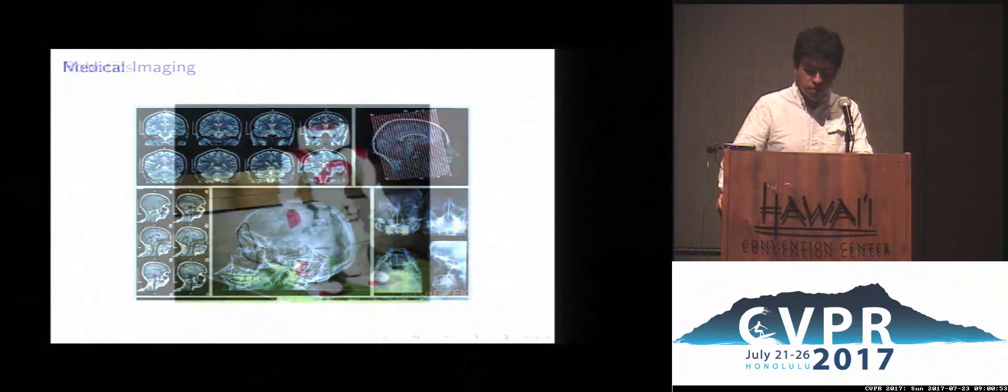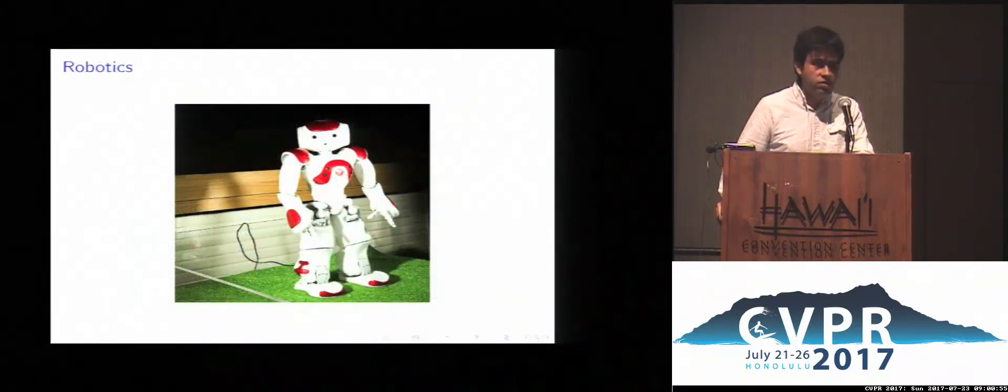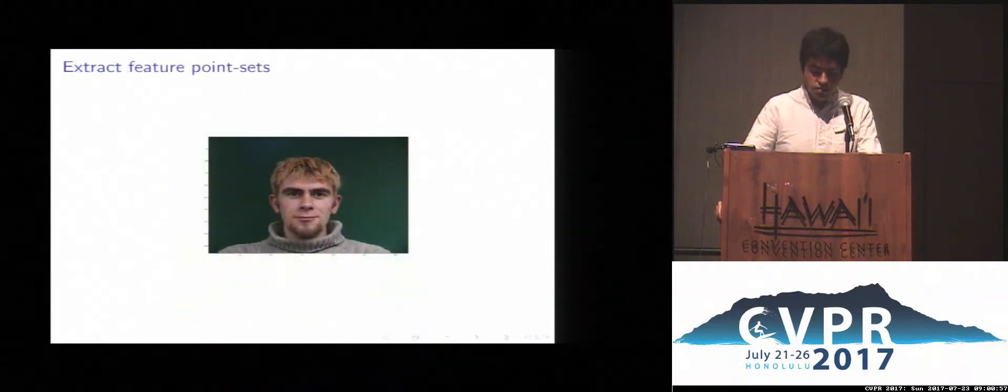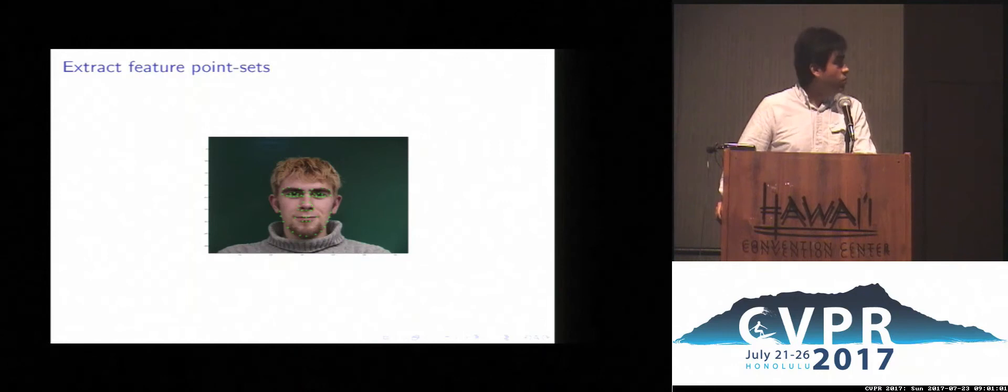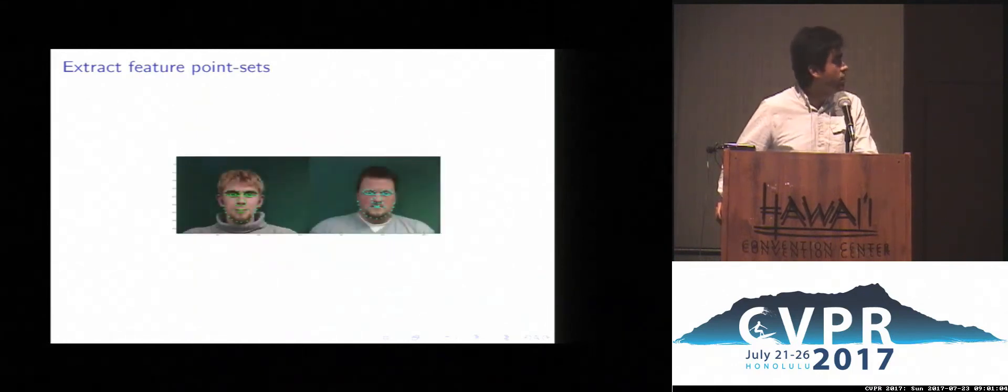For point-set registration, typically a set of locations of characteristic points in an image are detected, and then these points are aligned with other point sets from other objects or a template.